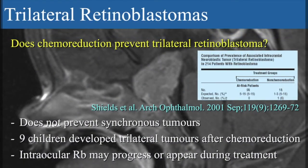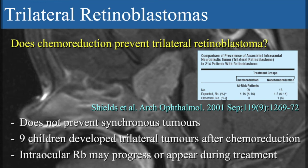Does chemoreduction prevent trilateral retinoblastoma? A colleague from Philadelphia pointed out that in the chemoreduction group they had 99 patients and expected to observe 5 to 15 trilateral tumours, whereas in the non-chemoreduction group of 18 cases they expected 1 to 3 cases and had one. But I don't think this is true. First of all, 50% of the tumours are diagnosed before chemoreduction, so it's very unusual that they had no trilaterals in 99 cases, because we would expect that half of these 5 to 15 would have been detectable at baseline. Somehow those patients were not referred. And in this meta-analysis with the Dutch colleagues, there were nine children who developed a trilateral tumour after chemoreduction, so now we know officially that it doesn't prevent trilateral disease.